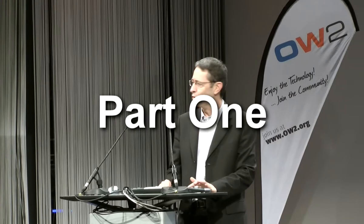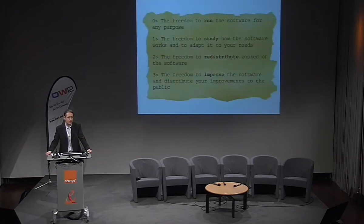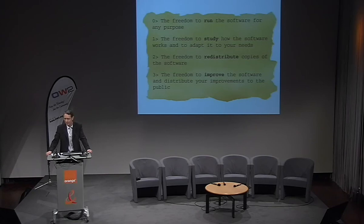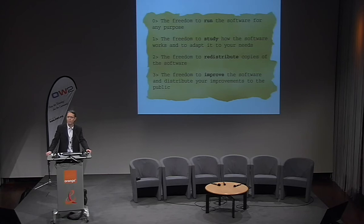This quick presentation to open the conference is about the state of OW2 — not only what we are, but where we are. We are in a market that has been launched about 30 years ago, in September of 1983, when Richard Stallman sent a mail saying he was going to develop a GNU, a free Unix operating system. And then he went on to define the four freedoms that define what we do today.